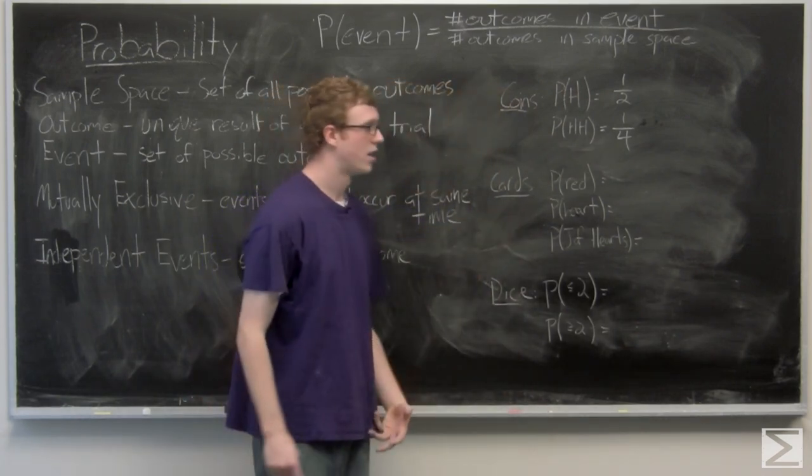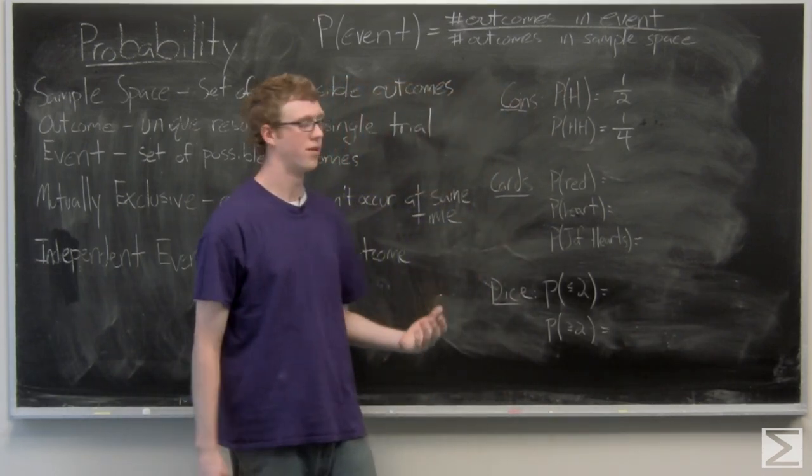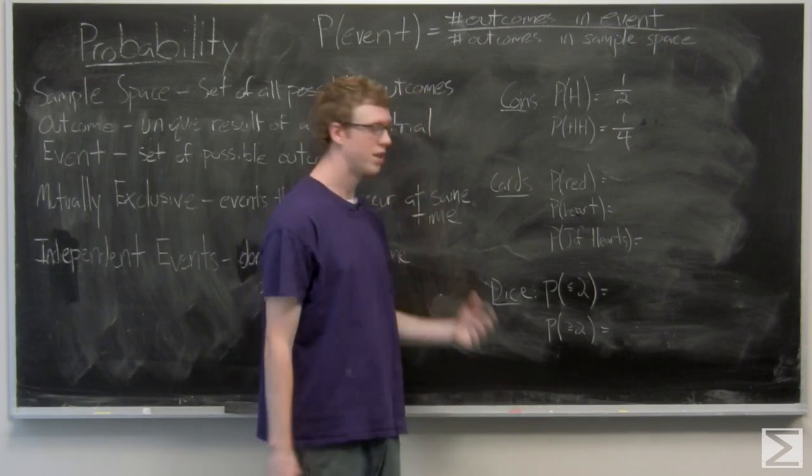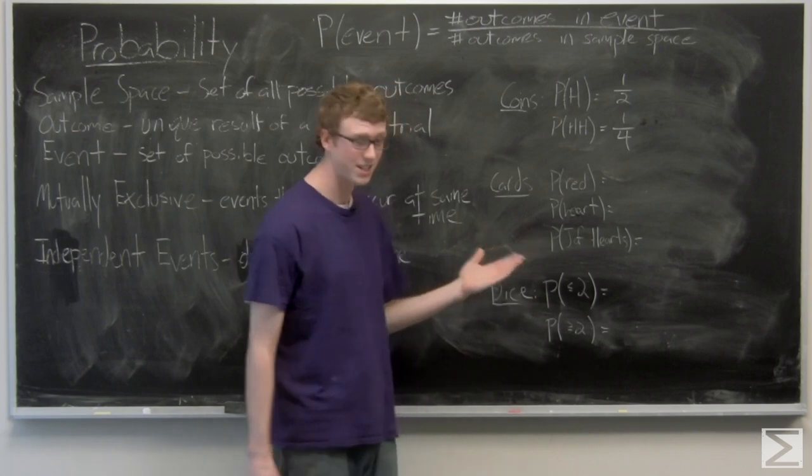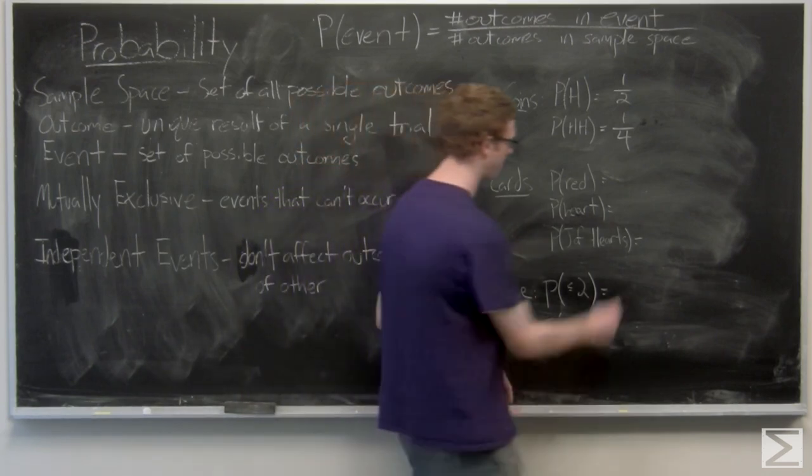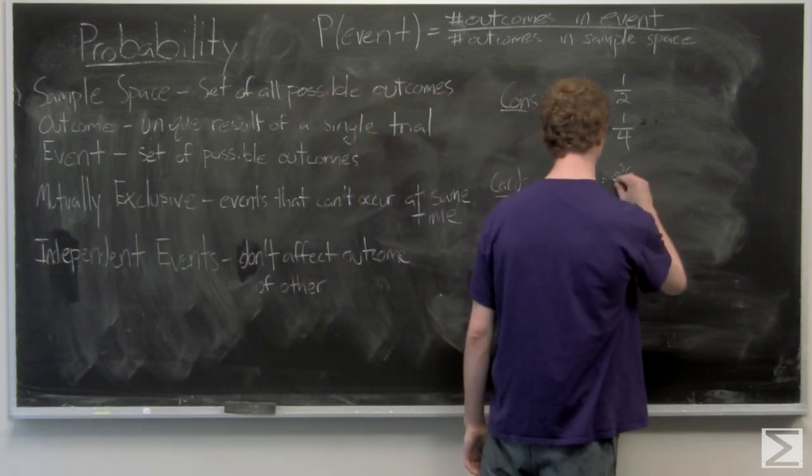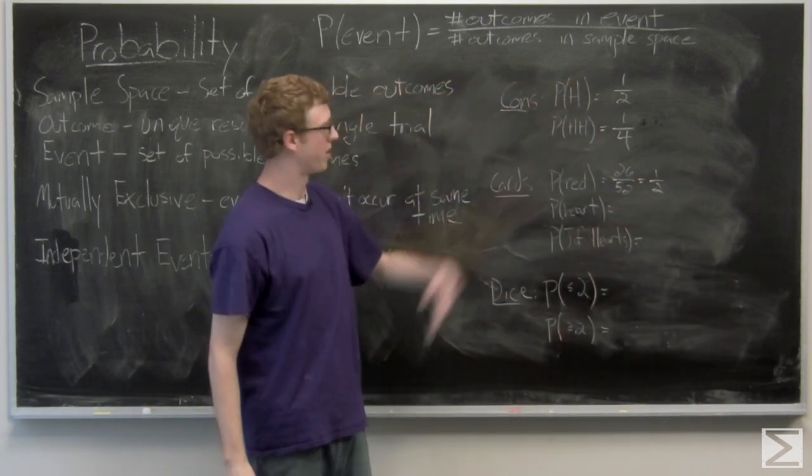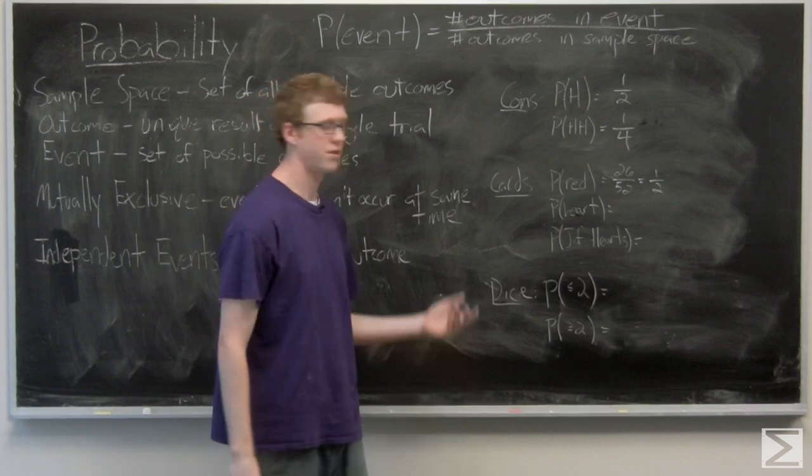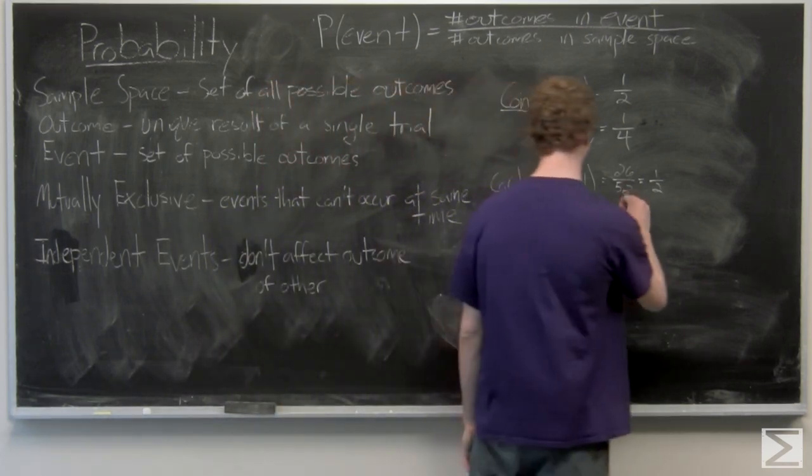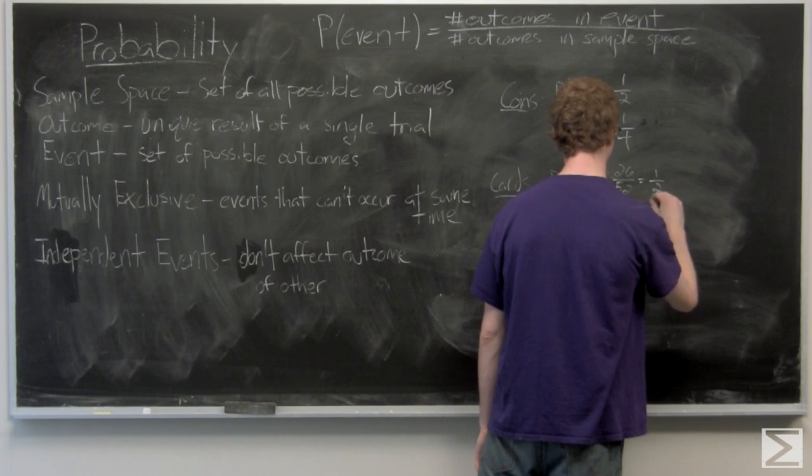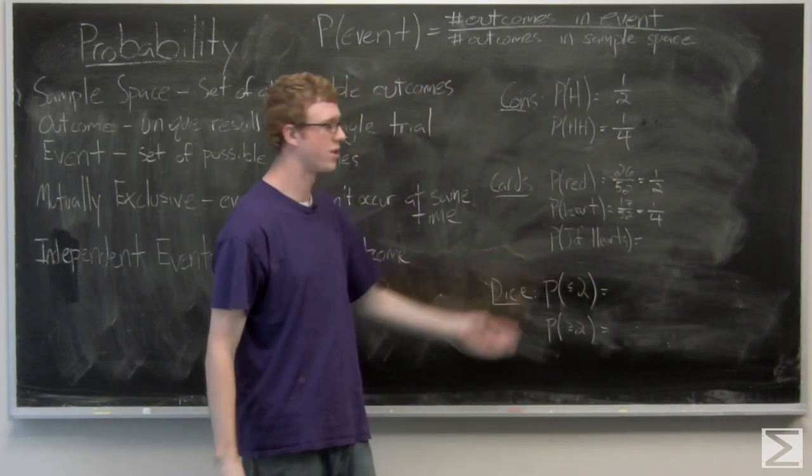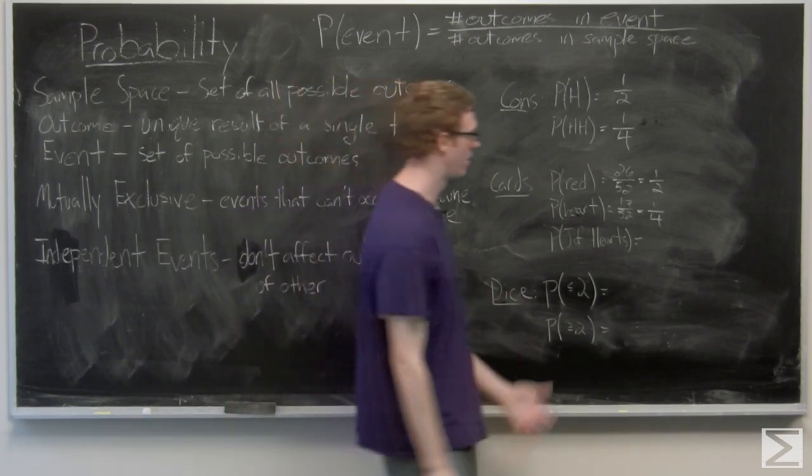We're going to take a look at cards. The probability of getting a red card, well, there's 13 hearts and 13 diamonds. This is a standard deck without jokers. So that's 26 out of 52 total possibilities, which is just a half. The probability of getting a heart, well, there's 13 hearts and there's 52 total. And then the probability of getting the jack of hearts. Well, there's only one jack of hearts. So that's one out of 52.